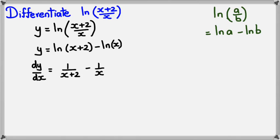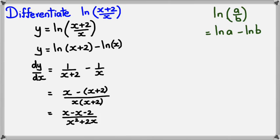Okay. Simplifying this, I would get x minus x plus 2 divided by x times x plus 2. I can simplify this a bit further, and I'll get x minus x minus 2 over x squared plus 2x. And this would equal negative 2 over x squared plus 2x.